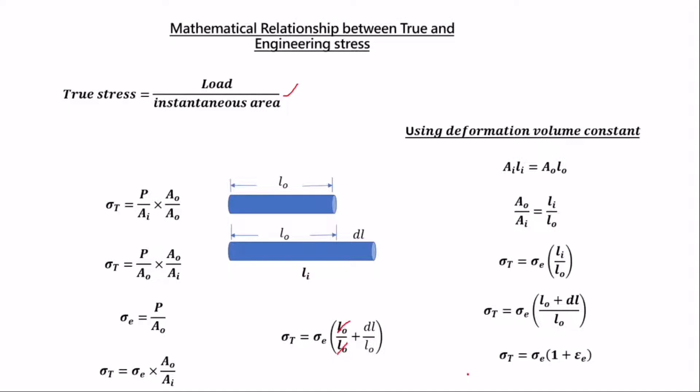Engineers don't use the true stress in manufacturing; they use the engineering stress. This is because the engineering stress is always less than the true stress. The true stress is the stress at which, when applied, the material will fracture or deform. Therefore, in manufacturing, engineers use the engineering stress so that the applied stress does not cause the material to fracture.